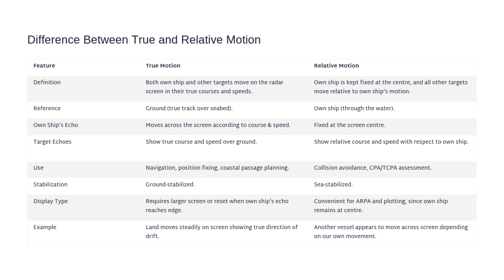Let's move on to one of the most important radar concepts: true motion versus relative motion. In true motion, both your ship and other targets move across the radar screen in their actual courses and speeds — the reference is the ground. Your ship's echo moves across the display according to its true track over the seabed. In relative motion, your ship stays fixed at the center of the radar screen while all other targets move in relation to your movement — the reference is your own ship moving through the water. True motion is used for navigation, coastal passage planning, and position fixing. Relative motion is used for collision avoidance and for assessing CPA and TCPA. For stabilization, true motion is ground stabilized, while relative motion is sea stabilized.